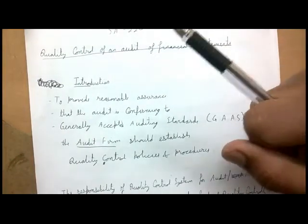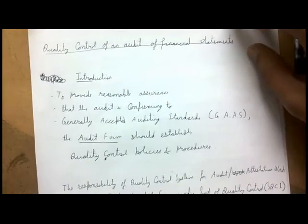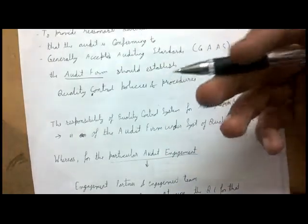To provide reasonable assurance that the audit conforms to auditing standards, the audit firm should establish quality control policies and procedures. The audit firm — not the client — firms like KPMG and Ernst & Young are the ones who establish these policies. There are two kinds of responsibilities: one for establishing the quality control system for the whole entity, and one for a particular engagement.